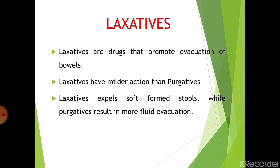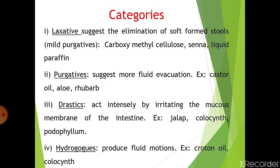Laxatives have milder action than purgatives. Laxatives result in soft formed stools, while purgatives result in more fluid evacuation of the bowels. Depending upon the intensity of drug effects, laxatives are categorized into four categories. The first category is laxatives — these drugs suggest the elimination of soft formed stools and are also called mild purgatives. Examples include carboxymethylcellulose, senna, and liquid paraffin.